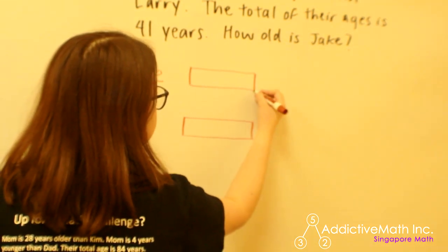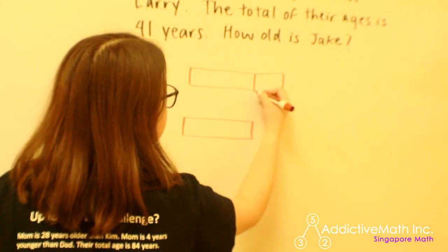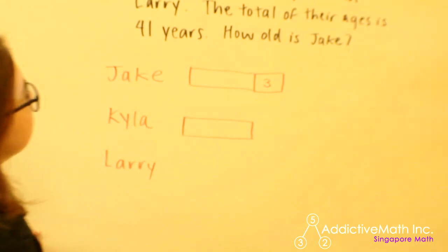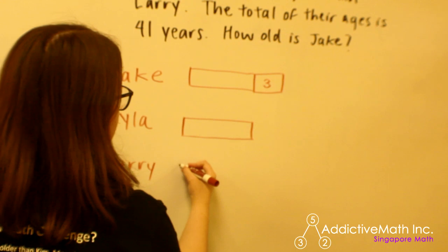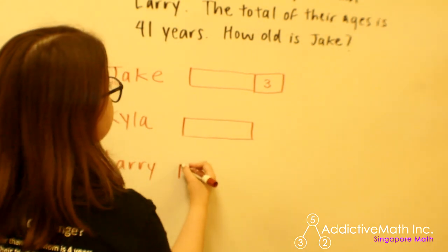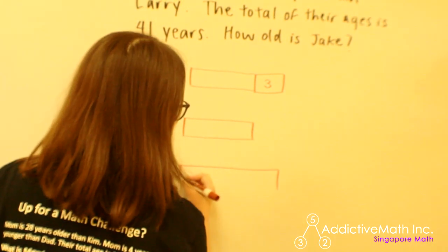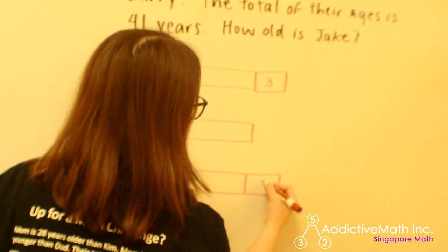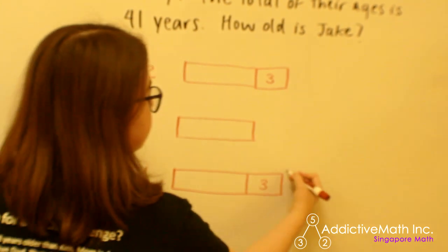There's Kyla's age, and then Jake is 3 years older. Jake is also 2 years younger than Larry — in other words, Larry is 2 years older than Jake. So Larry is whatever Jake is, plus 2 more years.